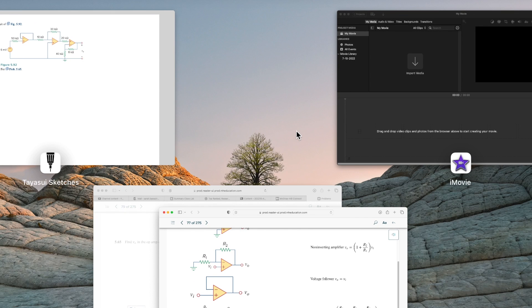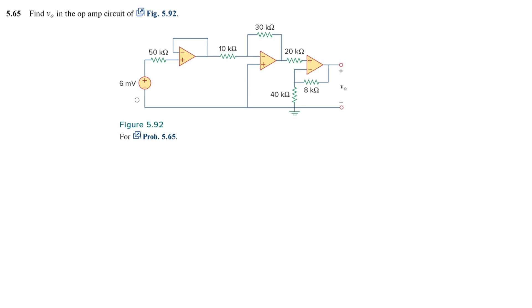Going back to our circuit here I can see that this is a voltage follower or a buffer, this is an inverting amplifier and this is a non inverting amplifier.